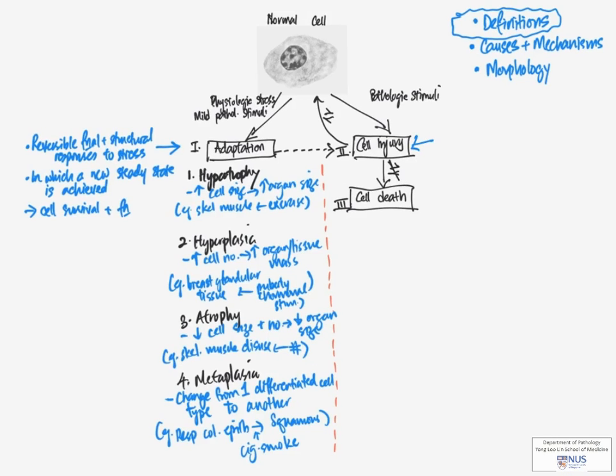Now moving on to cell injury, this is defined as a sequence of events that occurs when the stress exceeds the ability of the cells to adapt. So they can no longer reach a steady state and then they start to show features of damage.